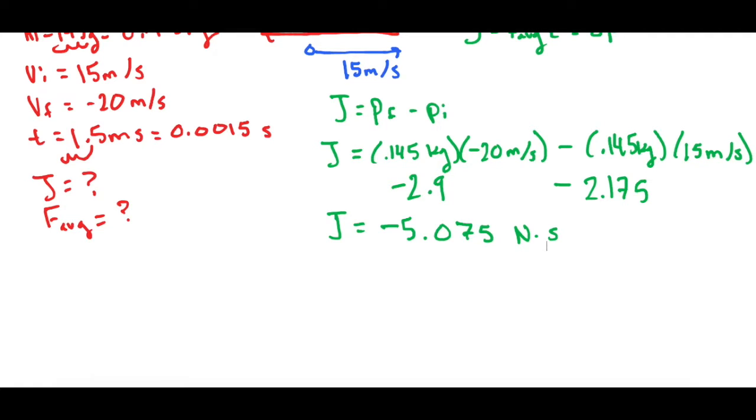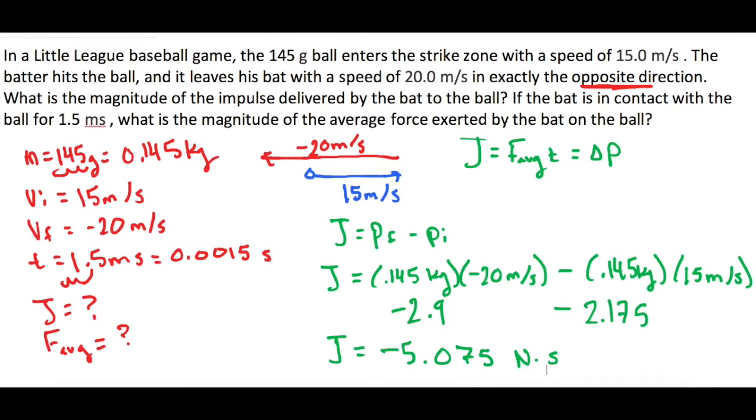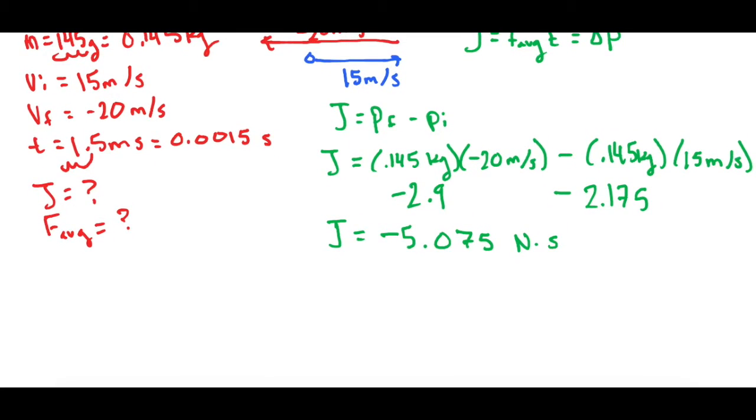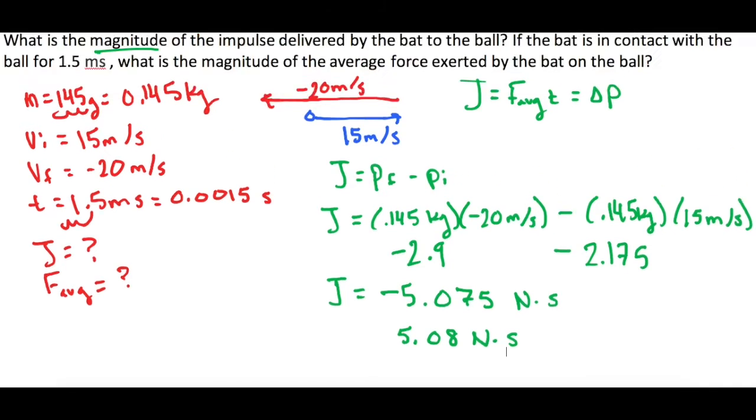Now, in the question, let's go back up to it real quick. They just want the magnitude. So even though they gave us direction and everything, since they want the magnitude, we're just going to use the absolute value of this. So rounded, it will be 5.08 newton times seconds, and that's positive. Okay, so that's the first part. Now we found J.